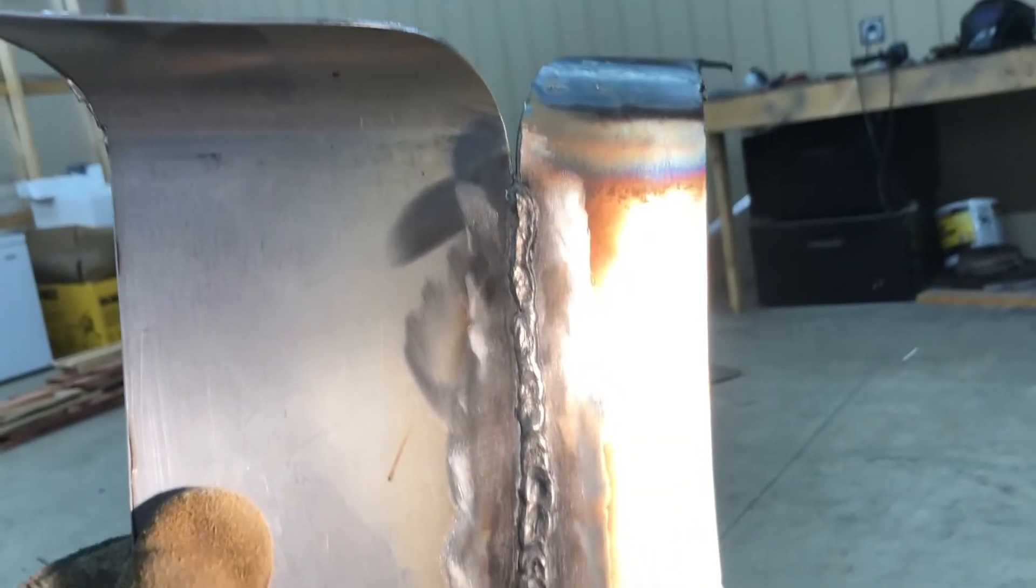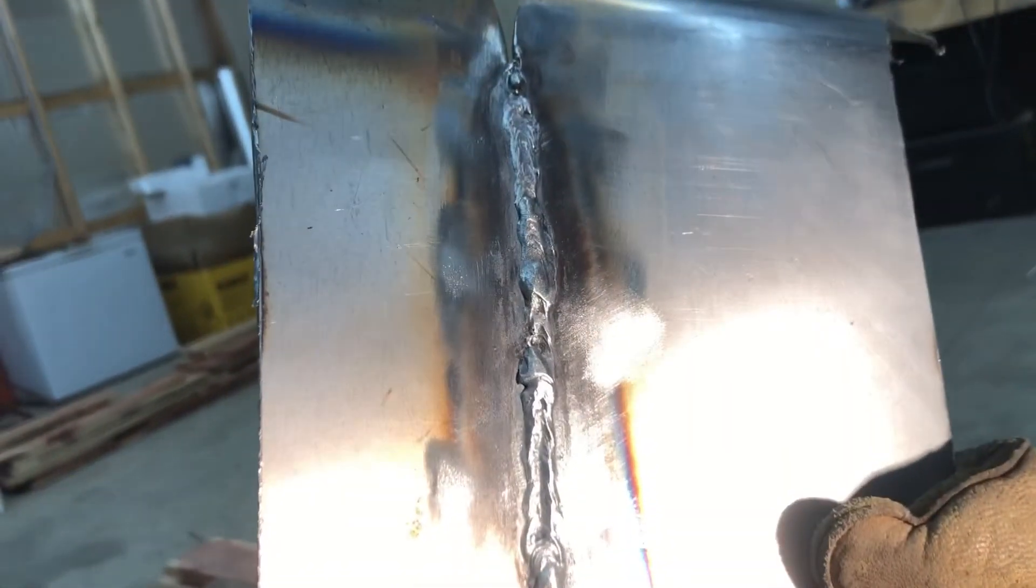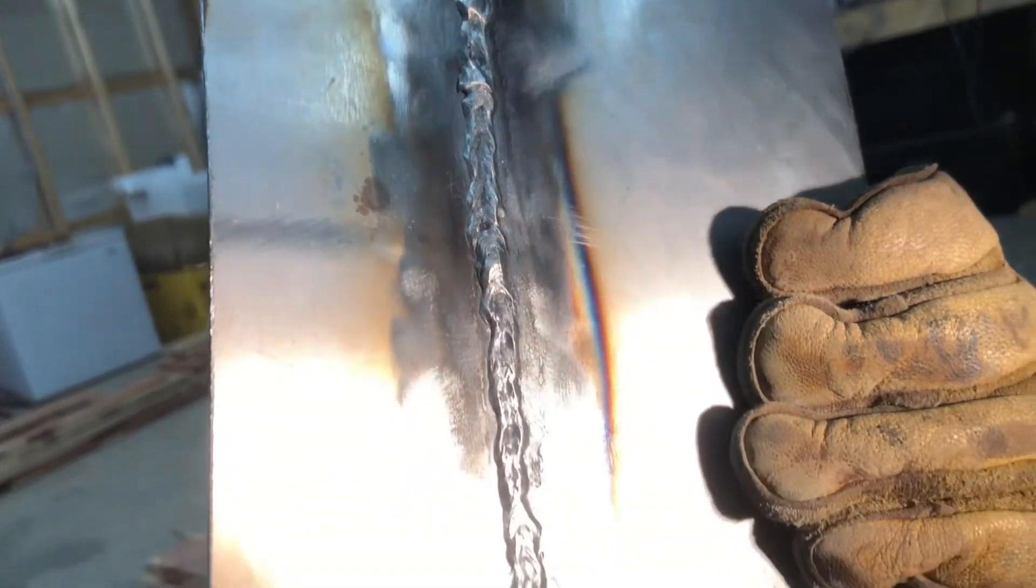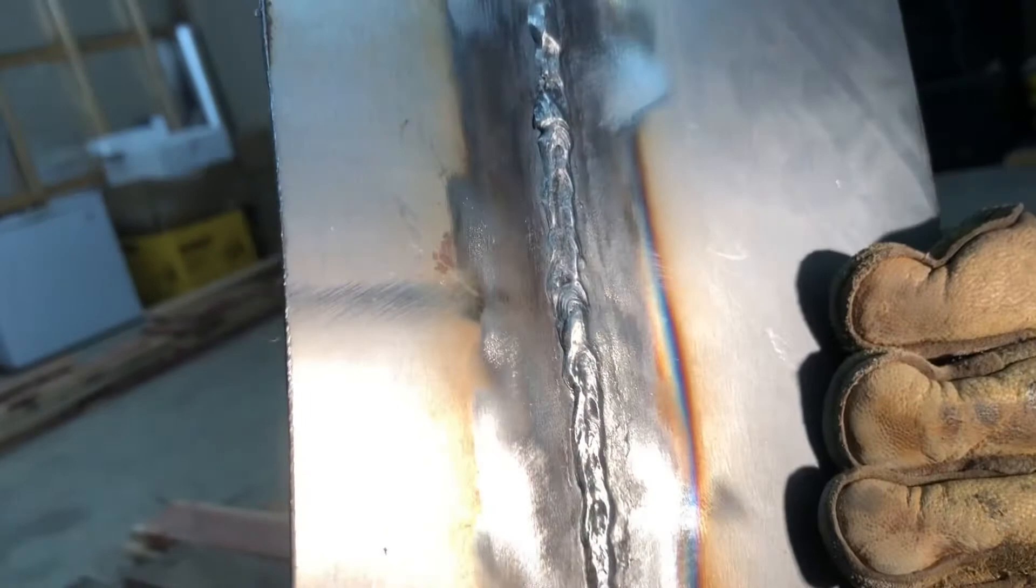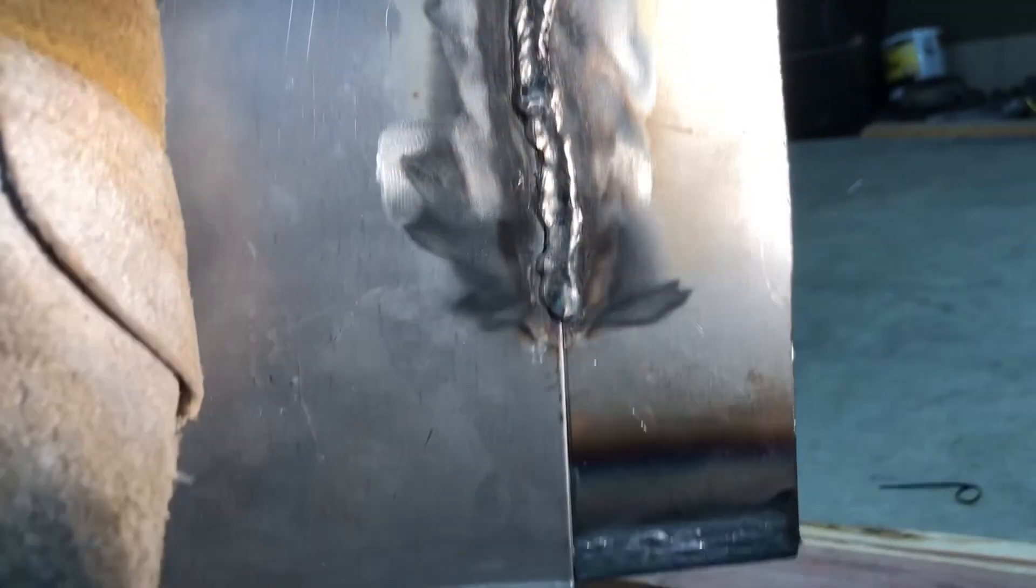Well, there you have it guys - downhill stick welding on super thin metal. It's not pretty at all, but it is welded on both sides. If all you've got is a stick machine for this thin stuff, it can be done. And it'll hold really good. So don't think it can't be done.